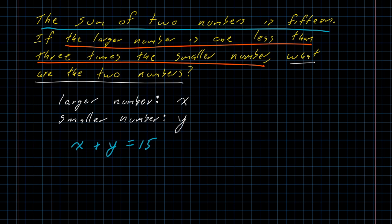The larger number is one less than three times the smaller number. The larger number we represented using x, is, our verb, one less than three times the smaller number. So we take our smaller number y, we multiply by three, and we subtract one. One less than three times the smaller number. There's a second equation.